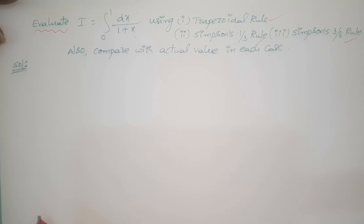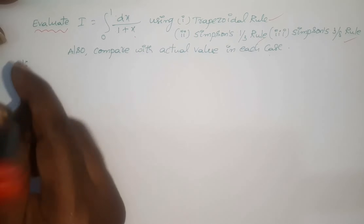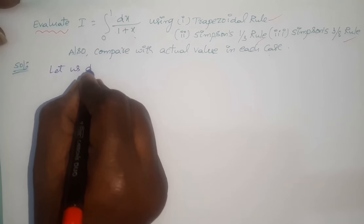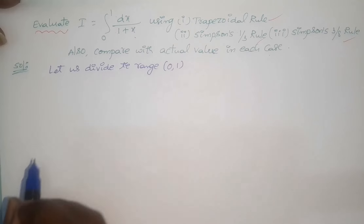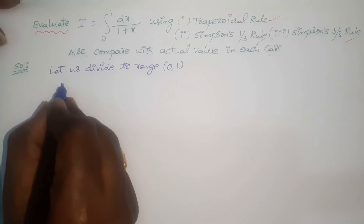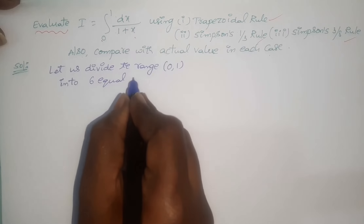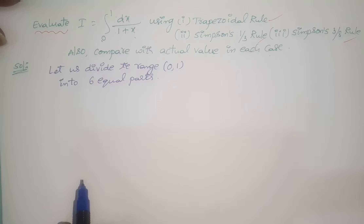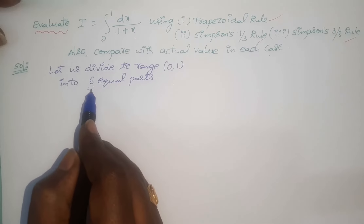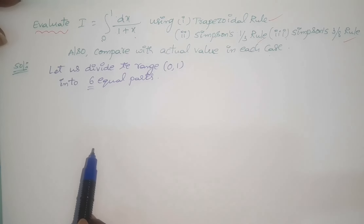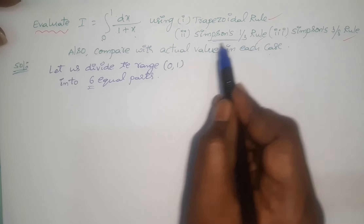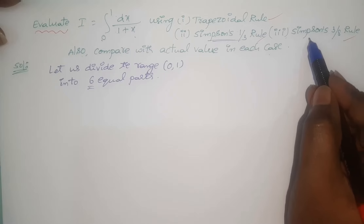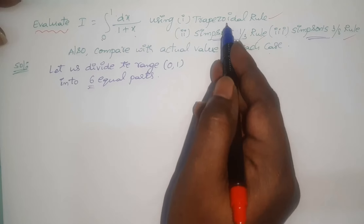First, let us divide the given range 0 to 1 into 6 equal parts. The limits of the given integral are known as the range. We divide into 6 equal parts because 6 is an even number, so we can apply Simpson's one-third rule; 6 is a multiple of 3, so we can apply Simpson's three-eighth rule; and there are no restrictions for applying the Trapezoidal rule.